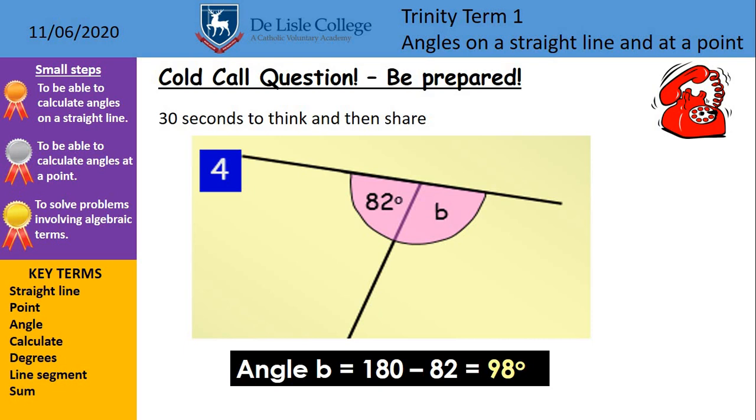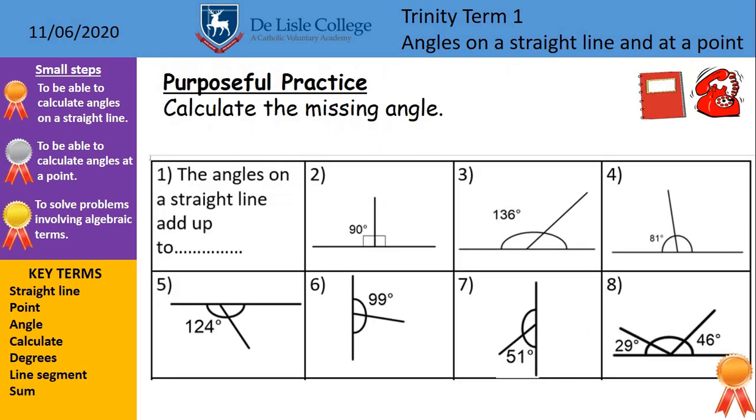They should always, angles on a straight line will add up to be 180 degrees. So there's eight more, have careful attention there on number eight, as there's three angles in total, but still the same rule will apply, they'll add up to be 180, so if you can pause the video there and have a go at those eight for me. Answers for these ones, I've just missed off the degree sign, but obviously you'll be putting those on when you answer these in your books for me.